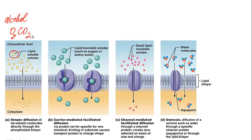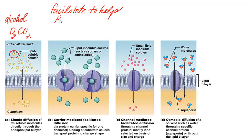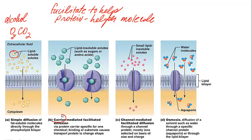When there are other molecules that need a little help, they utilize what's called facilitated diffusion. The word 'facilitate' means to help. In this case, there is going to be some sort of protein which acts as the helper molecule, assisting in allowing a certain molecule to cross the membrane. The two types of facilitated diffusion are carrier-mediated facilitated diffusion and channel-mediated facilitated diffusion.